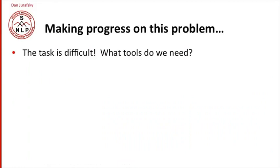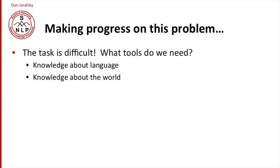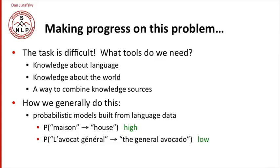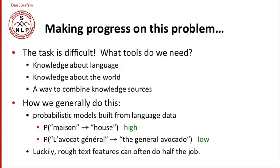The task of natural language understanding is very difficult. What tools do we need? We need knowledge about language, knowledge about the world, and a way to combine these knowledge sources. Generally, the way we do this is to use probabilistic models built from language data. For example, if we see the word 'maison' in French, we're very likely to translate that as 'house' in English. On the other hand, if we see 'avocado' in French, we're very unlikely to translate that as the general avocado. Training these probabilistic models can be very hard, but we can do an approximate job with rough text features, and we'll introduce those as we go.